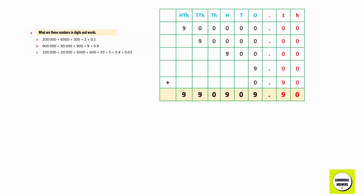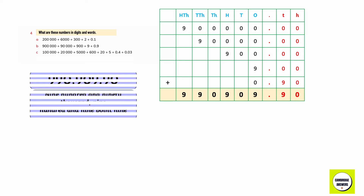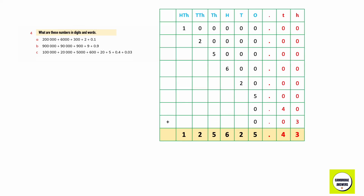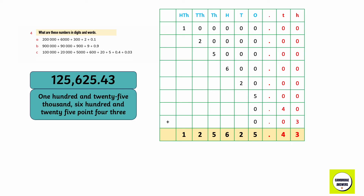900,000 + 90,000 + 900 + 9 + 0.9 gives you 990,909.9. And 100,000 + 20,000 + 5,000 + 600 + 20 + 5 + 0.4 + 0.03 gives you 125,625.43.